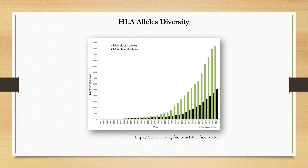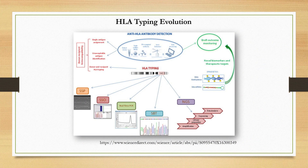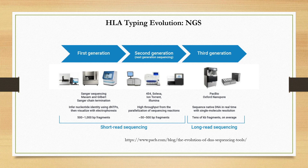The number of described alleles has increased according to the evolution of the technology. HLA typing evolved from serology techniques to molecular techniques, starting with PCR-SSP, PCR-SSO, and real-time PCR. High-resolution tests started with SBT, the Sanger sequencing method, followed by next-generation sequencing which includes Illumina and Ion Torrent sequencers. We are now in the third generation of sequencing, which includes the long-read sequencers PacBio and Oxford Nanopore.